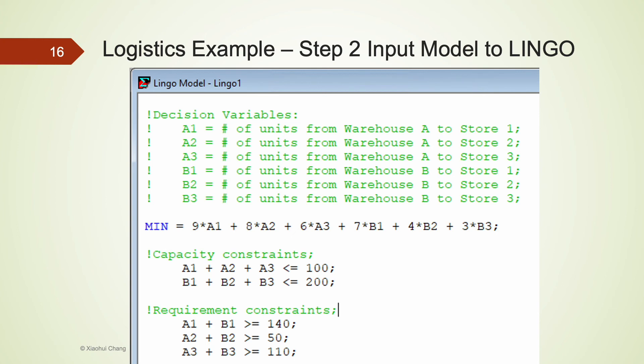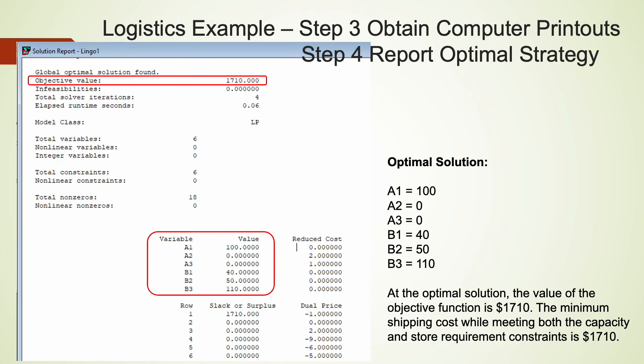Step 3 and step 4 ask us to obtain computer printouts, interpret the optimal solution, and report the optimal strategy. It took Lingo 0.06 seconds to find the optimal solution for this linear programming problem.